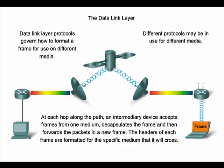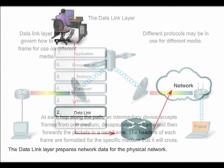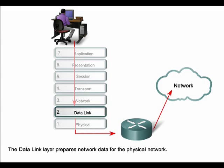It is the role of the data link layer to prepare network layer packets for transmission and to control access to the physical media. The data link layer exists as a connecting layer between the software processes of the layers above it and the physical layer below it. It relieves the upper layers from the responsibility of putting data on the network and receiving data from the network.